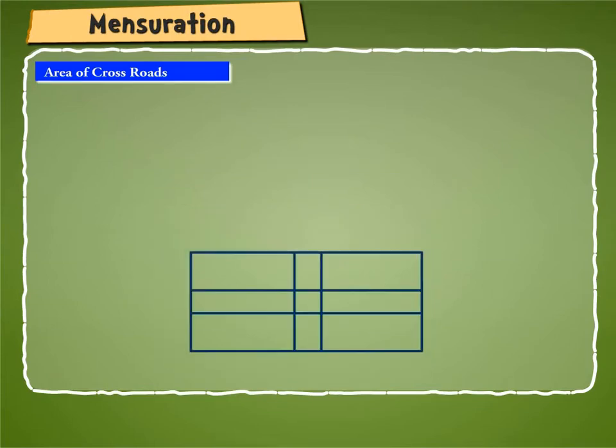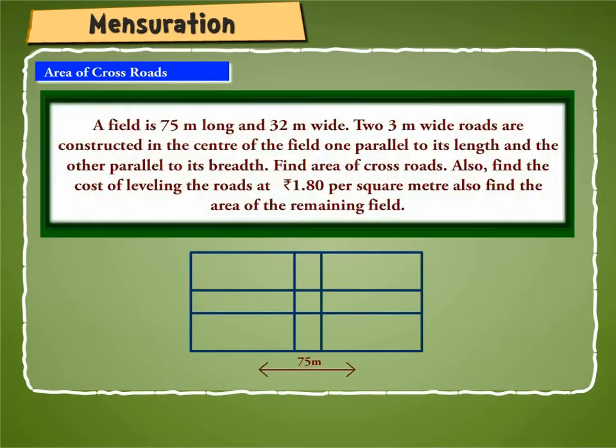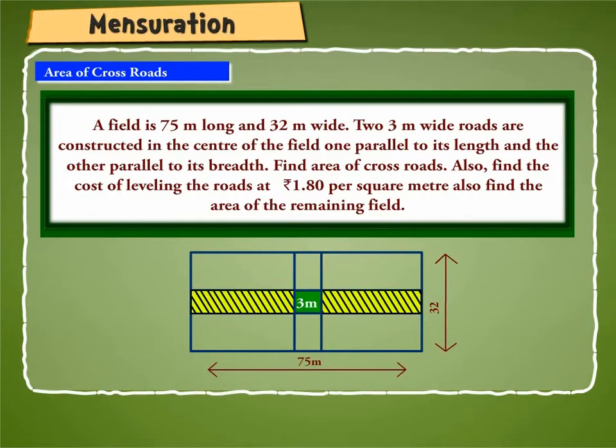Let us find the area of crossroads with the help of an example. Suppose a field is 75 meter long and 32 meter wide. Two 3 meter wide roads are constructed in the center of the field, one parallel to its length and the other parallel to its breadth. Find area of crossroads.